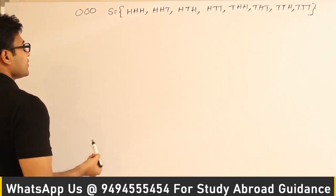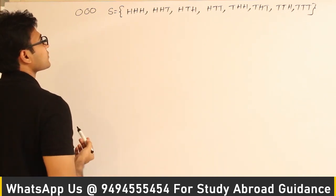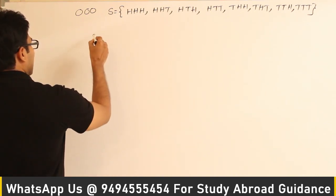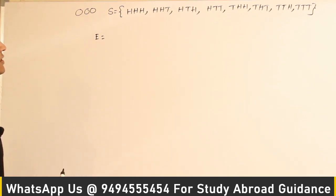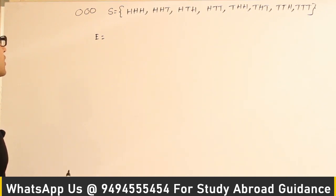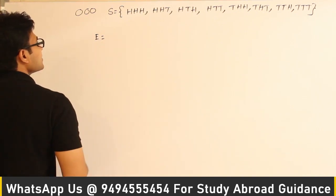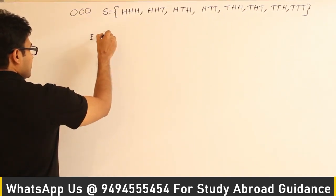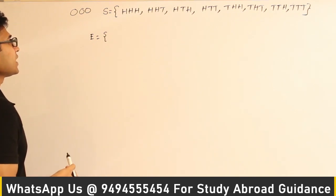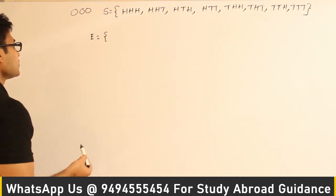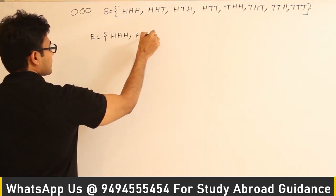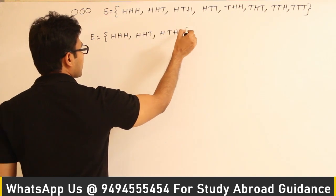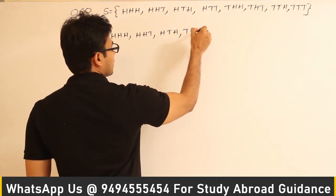Initially, all probabilities are 1/8 each. Now let us say event E has already occurred. E is an event where at least two of the coins turned out to be heads. So E will contain all outcomes where at least two heads appear.